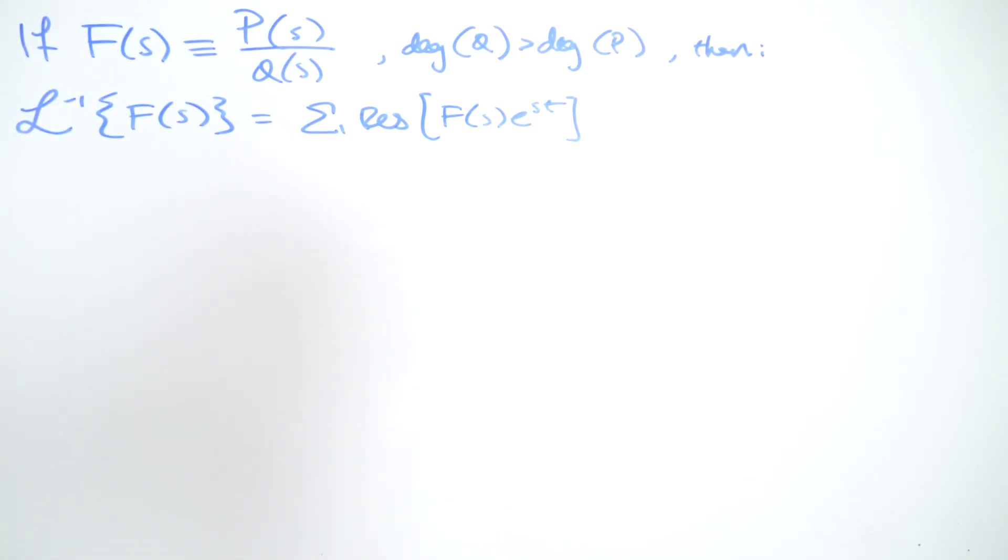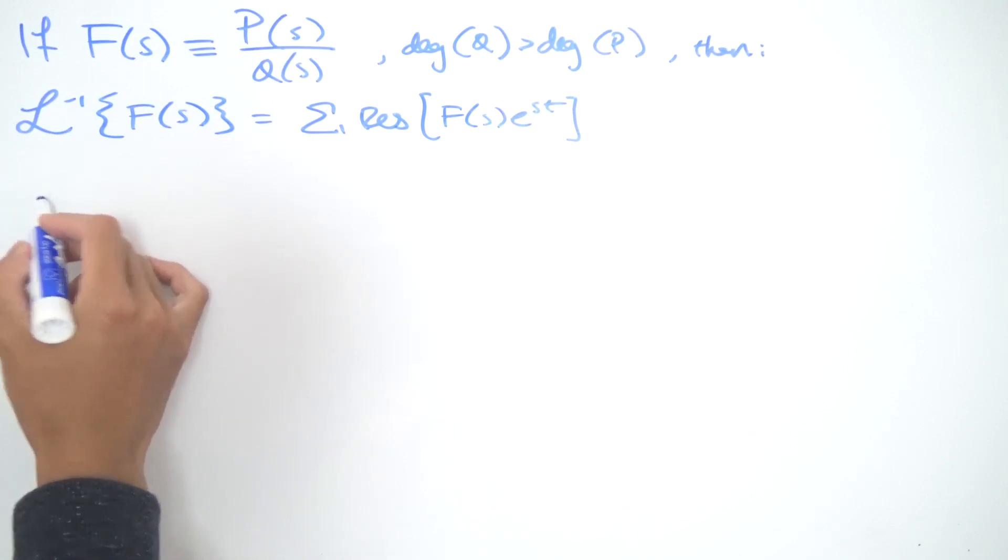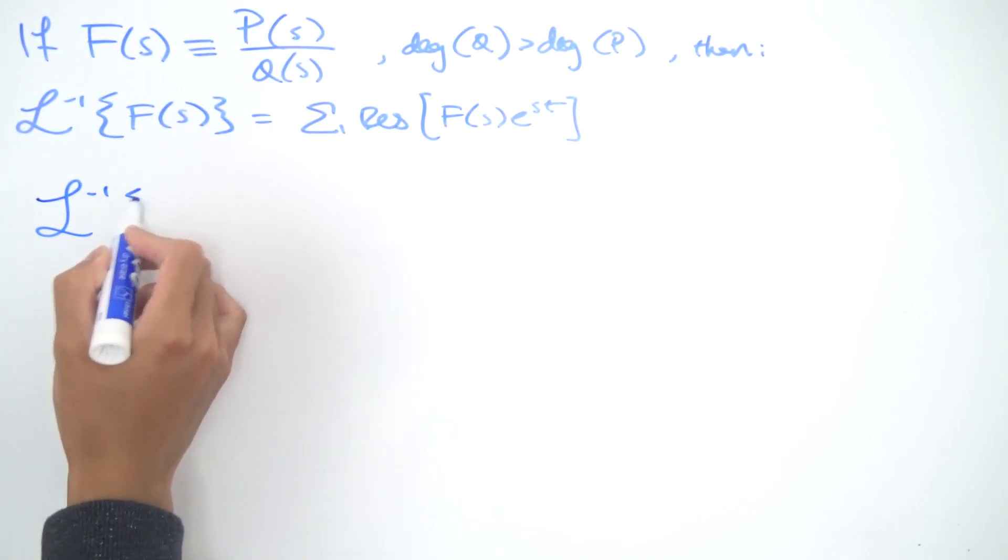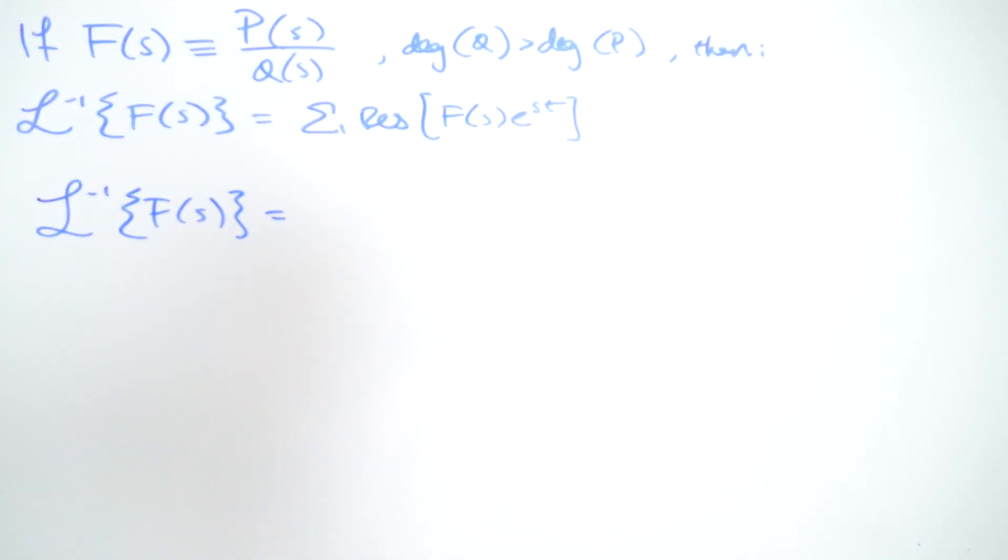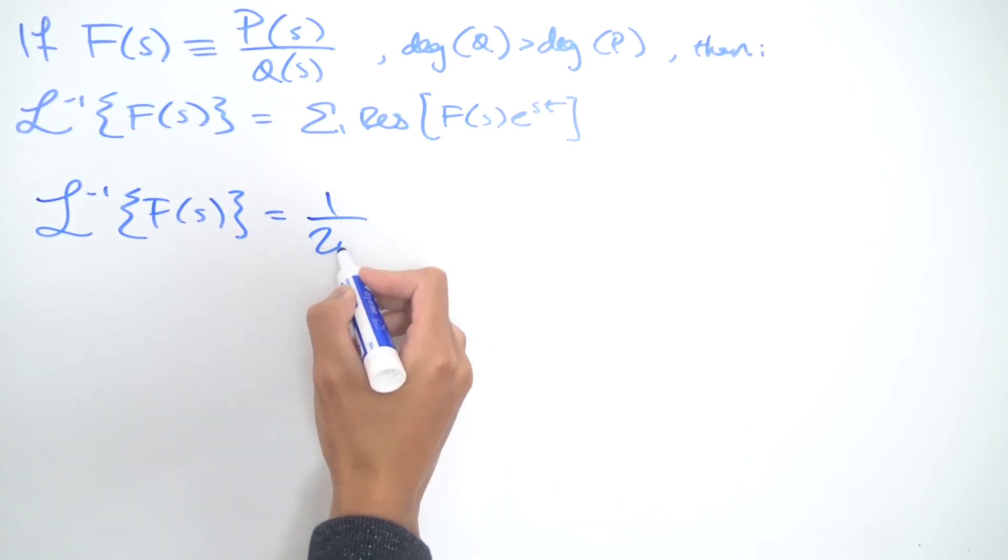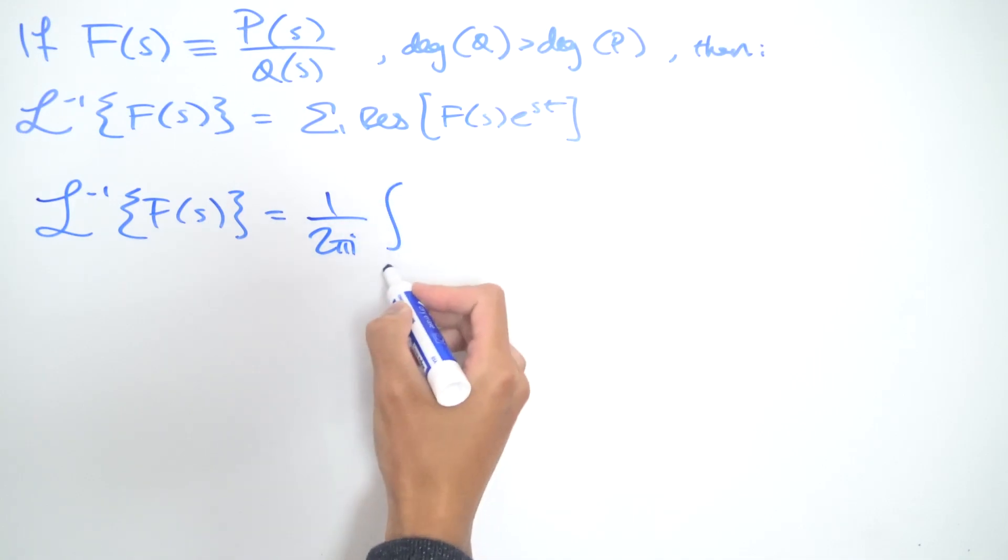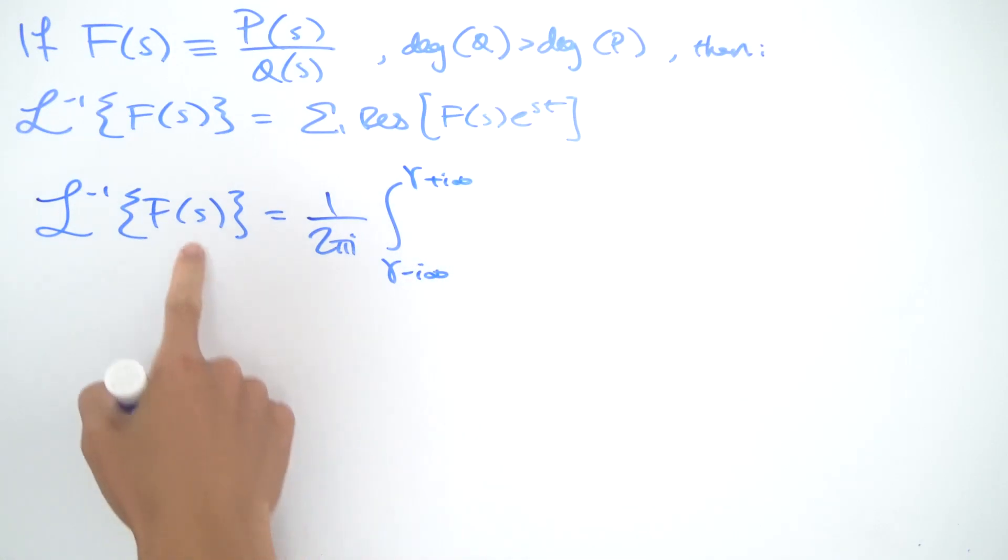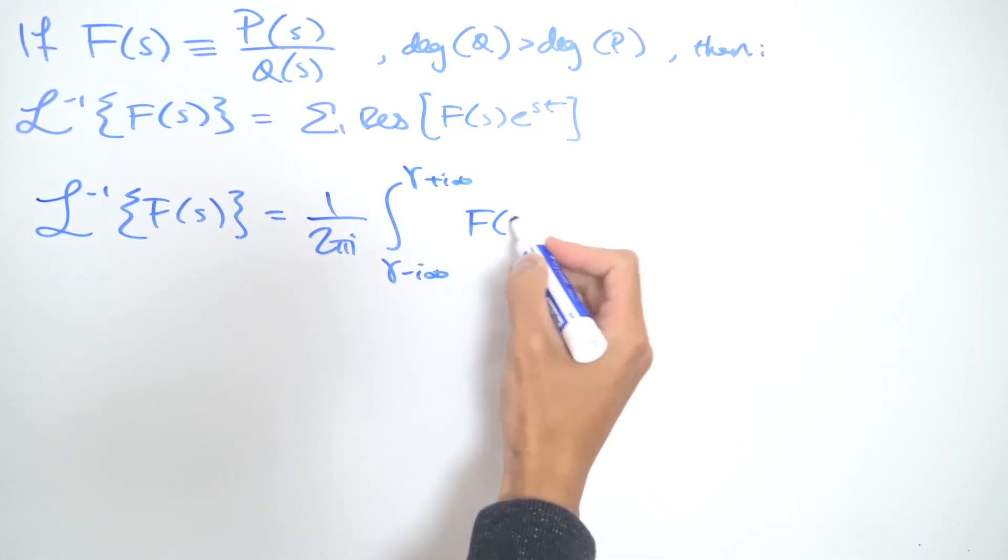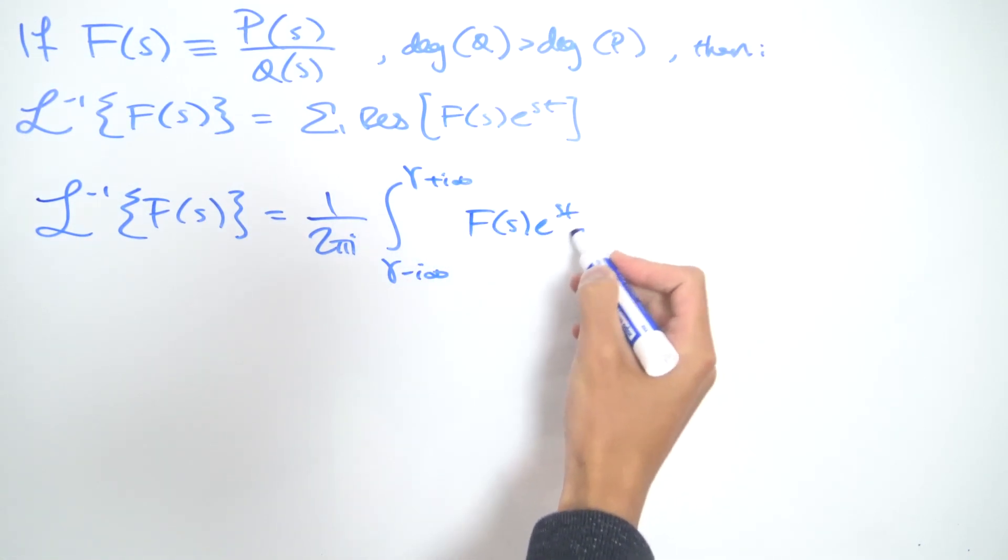So this result actually comes from the Bromwich contour as well as the inverse Laplace transform formula. Recall that the inverse Laplace transform of some function F of s can be given by the following integral: 1 over 2πi times the integral from γ minus i∞ to γ plus i∞ of F(s) times e^(st) ds.